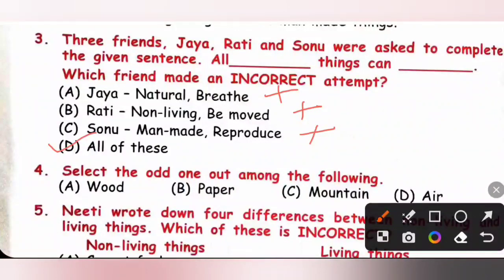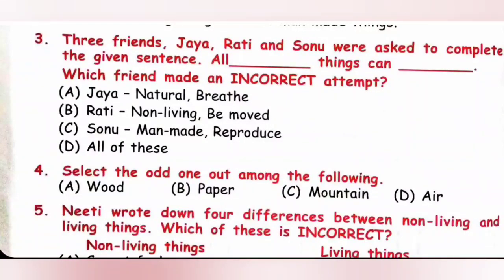Question 4: Select the odd one out. A: Wood — natural non-living thing. B: Paper — man-made non-living thing. C: Mountain — natural non-living thing. D: Air — natural non-living thing. Option B, paper, is the odd one out because A, C and D are natural non-living things, while only option B is a man-made non-living thing. Option B is the correct answer.